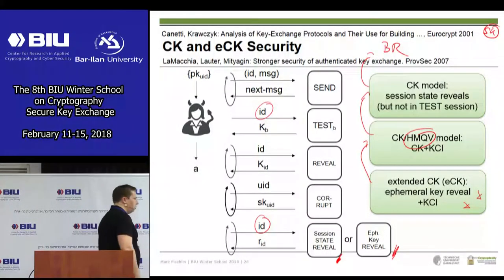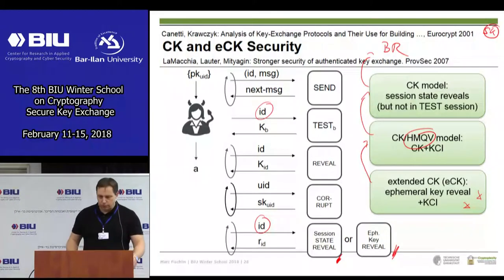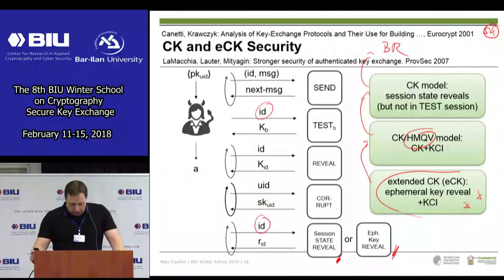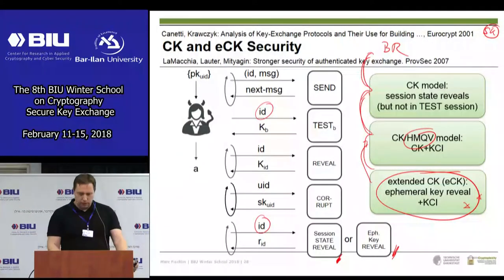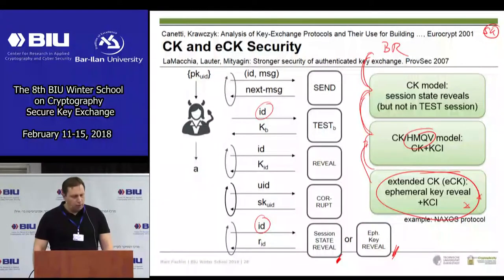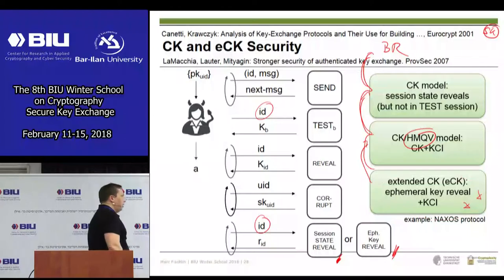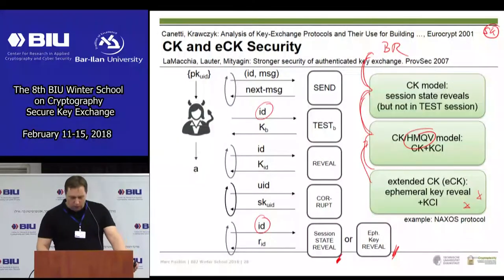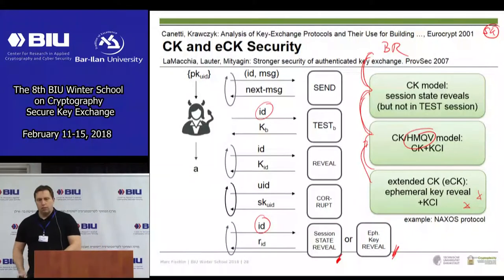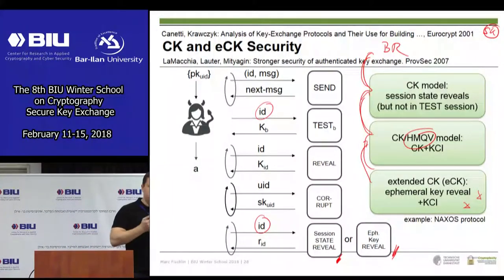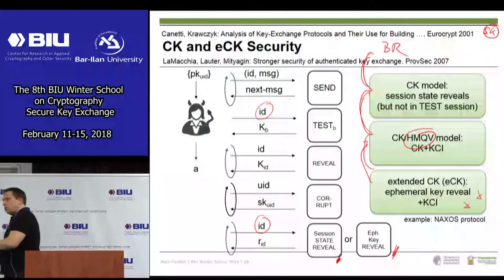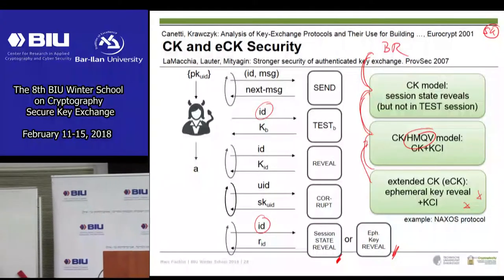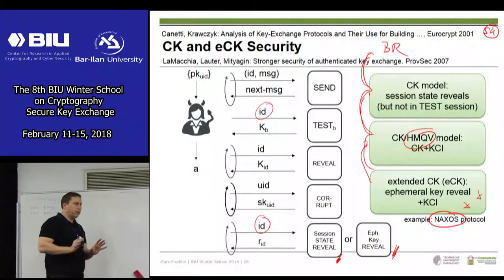Alternatively, you can do ephemeral key reveals — in Diffie-Hellman this is just x, it's a matter of taste. Then Hugo went on to a slightly more advanced protocol called HMQV, which achieves KCI security. LaMacchia, Lauter, and Mityagin then defined the extended CK model, ECK. This model covers KCI attacks and ephemeral key reveals, with one exception: in a tested session you cannot reveal both the ephemeral secrets and the long-term key.